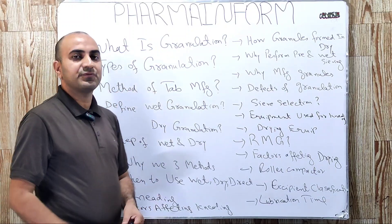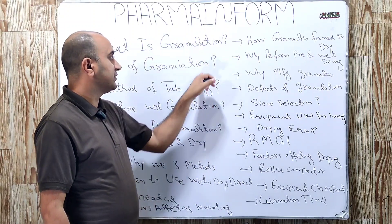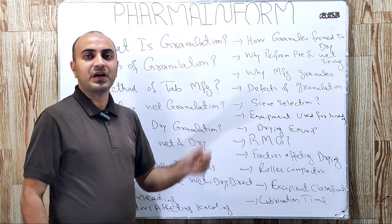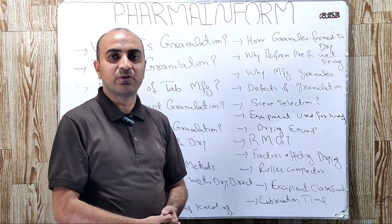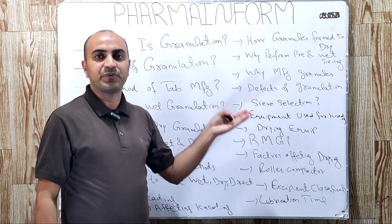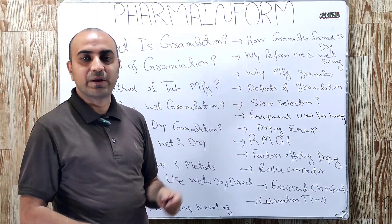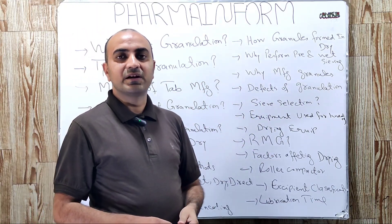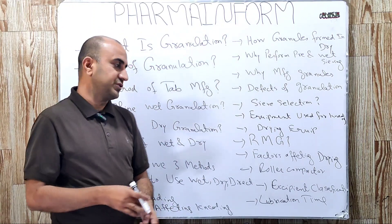What are the methods which are used for tablet manufacturing? Here is the confusion between these two questions. When it is asked to define or describe types of granulation, there are two types wet and dry. And when it is asked related to the tablet manufacturing, then there are three methods: wet granulation, dry granulation, and direct compression.